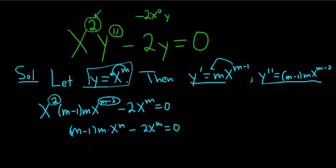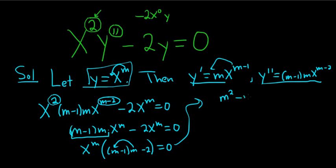All right, so now we can factor out x to the m. So x to the m, then we have m minus 1 times m minus 2, and that's equal to 0. If x is not 0, you can just divide by x. So we end up with m squared, distributing the m, minus m minus 2 equals 0.